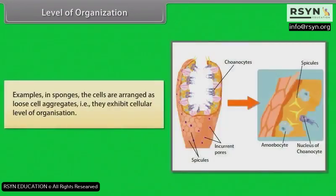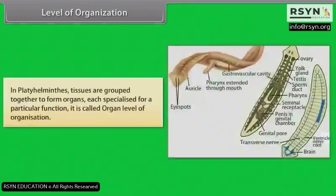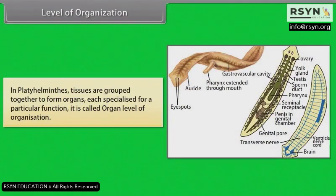In sponges, the cells are arranged as loose cell aggregates — that is, they exhibit cellular level of organization. In coelenterates, the cells performing the same function are arranged into tissues, hence it is called tissue level of organization. In platyhelminthes, tissues are grouped together to form organs, each specialized for a particular function — it is called organ level of organization.